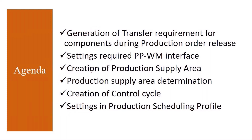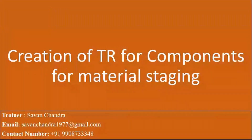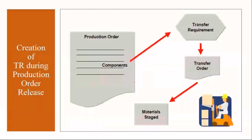I will show you the WM side settings as well, and we will discuss the production scheduling settings. First, we'll start with the creation of a transfer requirement for components for material staging. There will be a transfer requirement generation when you release the production order — we create the production order and when we release it, there will be a TR generation.